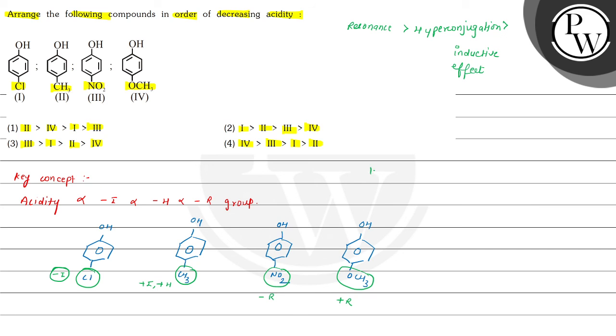So here the highest acidity will be of the third compound, after that the -I group shown by chlorine, then first, and the acidity is decreasing by +I or +H of the CH3, so the second, and the most decrease with +R of OCH3 group, so it is fourth. This order is given in option third. Hence, option third is the correct choice for this question. Hope you understood it well, all the best and thank you.